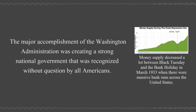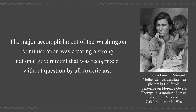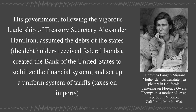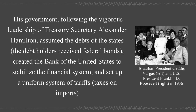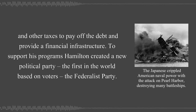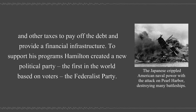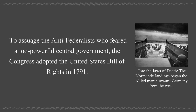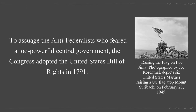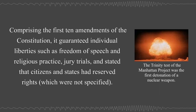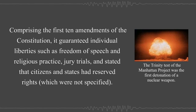The major accomplishment of the Washington administration was creating a strong national government recognized without question by all Americans. His government, following the vigorous leadership of Treasury Secretary Alexander Hamilton, assumed the debts of the states, the debt holders received federal bonds, created the Bank of the United States to stabilize the financial system, and set up a uniform system of tariffs, taxes on imports, and other taxes to pay off the debt and provide a financial infrastructure. To support his programs, Hamilton created a new political party, the first in the world based on voters, the Federalist Party. To assuage the anti-Federalists who feared a too-powerful central government, Congress adopted the United States Bill of Rights in 1791. Comprising the first ten amendments of the Constitution, it guaranteed individual liberties such as freedom of speech and religious practice, jury trials, and stated that citizens and states had reserved rights which were not specified.